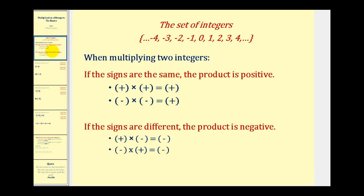When multiplying two integers, if the signs are the same, the product is positive. So a positive times a positive is positive, and a negative times a negative is also positive.